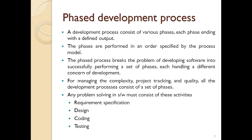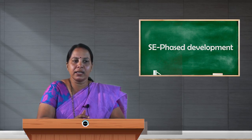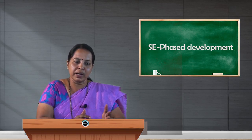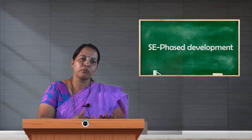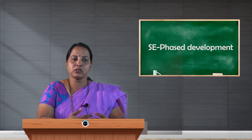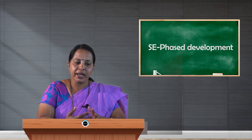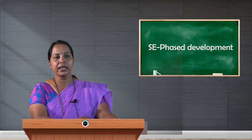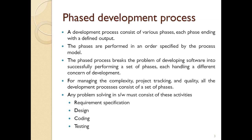For managing complexity, project tracking, and quality, the development process consists of a set of phases. It breaks the complexity of the problem by dividing it into a number of phases, and it allows us to monitor quality periodically and constantly.